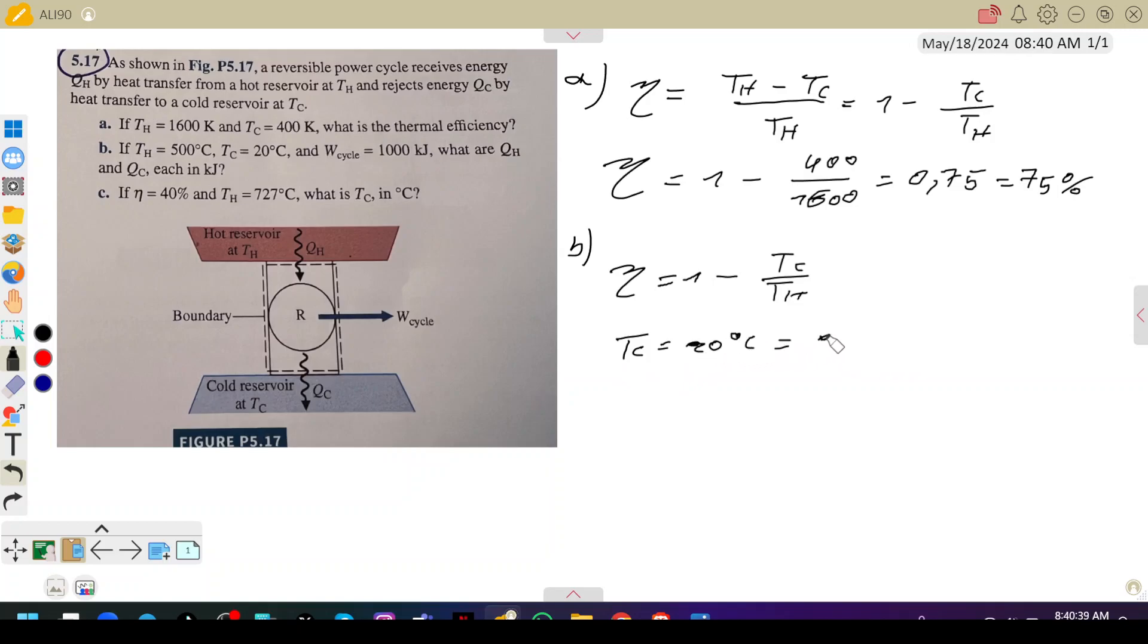Tc is equal to 20°C. Let's make it 20 plus 273 to convert to Kelvin, so the result is 293 Kelvin. The same for Th—this is 500°C, which is 500 plus 273, so this is 973 Kelvin. Which means τ would be equal to 1 minus 293 divided by 973.